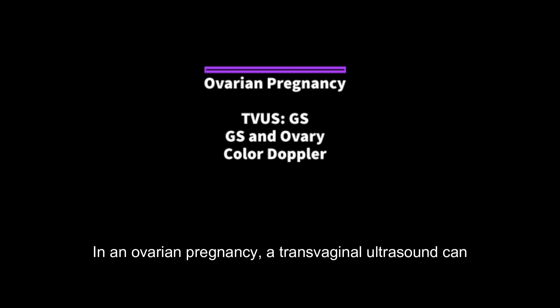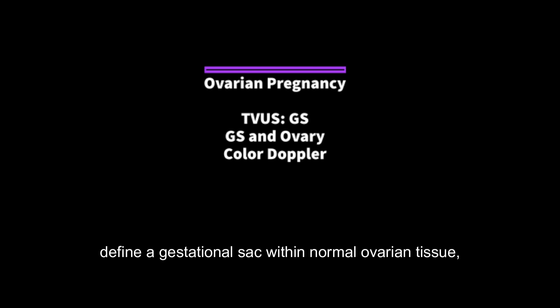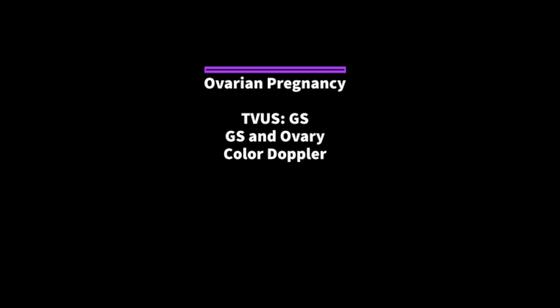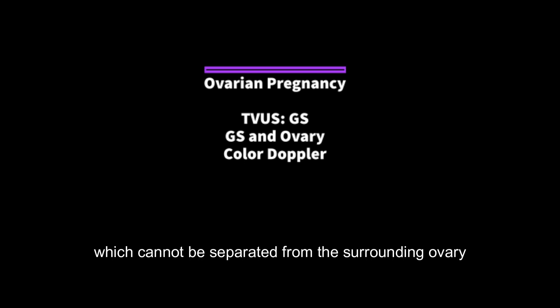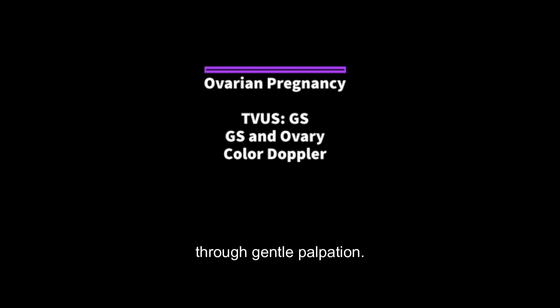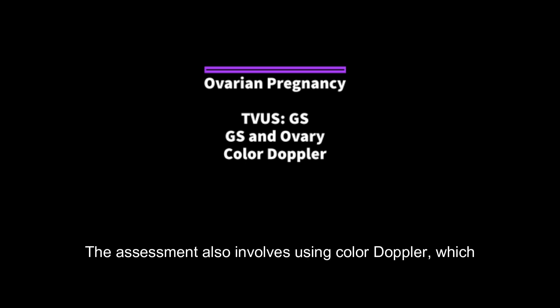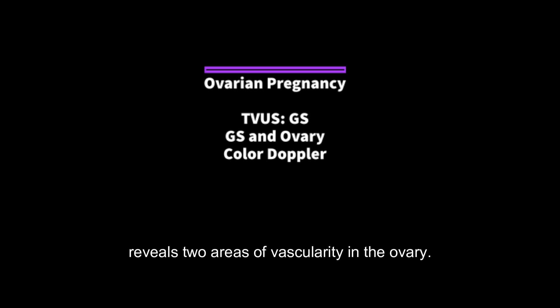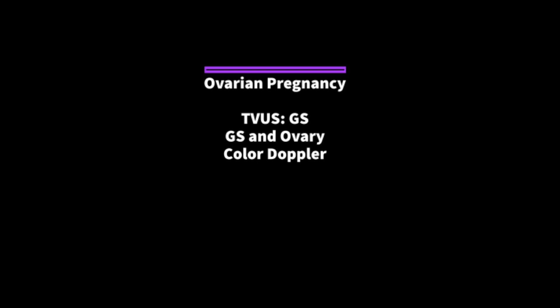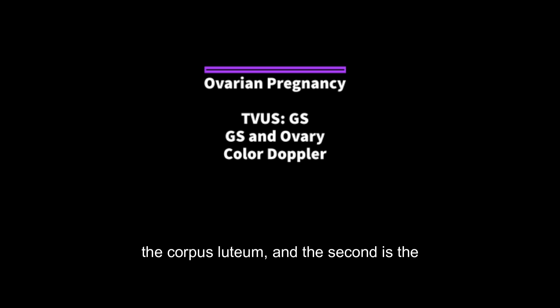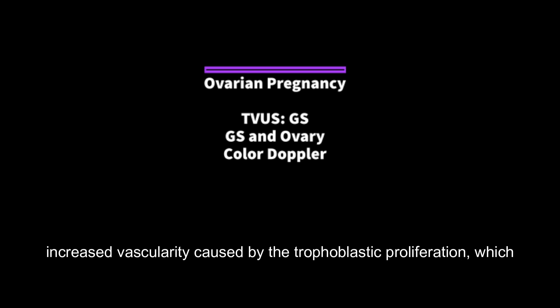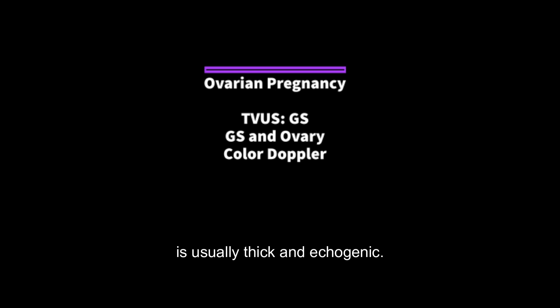In an ovarian pregnancy, a transvaginal ultrasound can define a gestational sac within normal ovarian tissue, which cannot be separated from the surrounding ovary through gentle palpation. The assessment also involves using color Doppler, which reveals two areas of vascularity in the ovary: the first is the ring of fire surrounding the corpus luteum, and the second is the increased vascularity caused by trophoblastic proliferation, which is usually thick and echogenic.